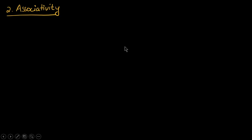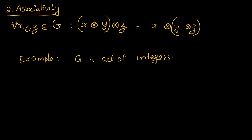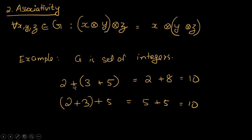The next property is associativity. For all X, Y, Z belonging to G, if we apply the operation like this: X star Y, and the answer is again star Z, the answer will equal X star (Y star Z). So there is an associative property. Taking the integers 2, 3, and 5 as an example, both (2 plus 3) plus 5 and 2 plus (3 plus 5) give the same answer. So the group Z plus gives you the associative property.